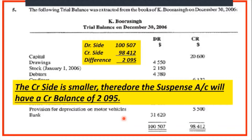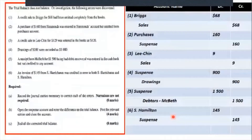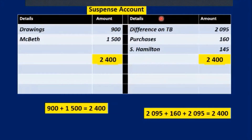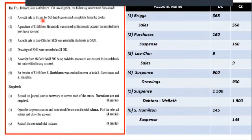You have to know which one is which. Looking at the trial balance, the debit side is $10,507 and the credit side is $9,8412. The difference is $2,095. Since the credit side is smaller, the suspense account will have a credit balance of $2,095. So we need to put in $2,095 on that side to make it balance. We have the suspense account here and I put in the $2,095 on the credit side.